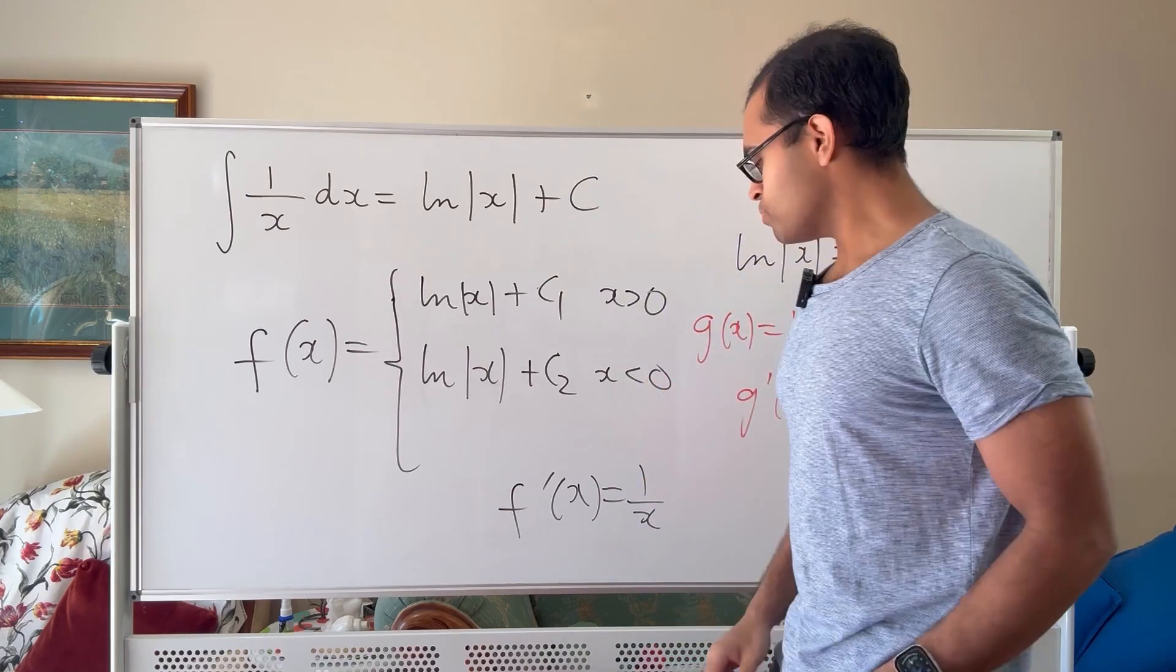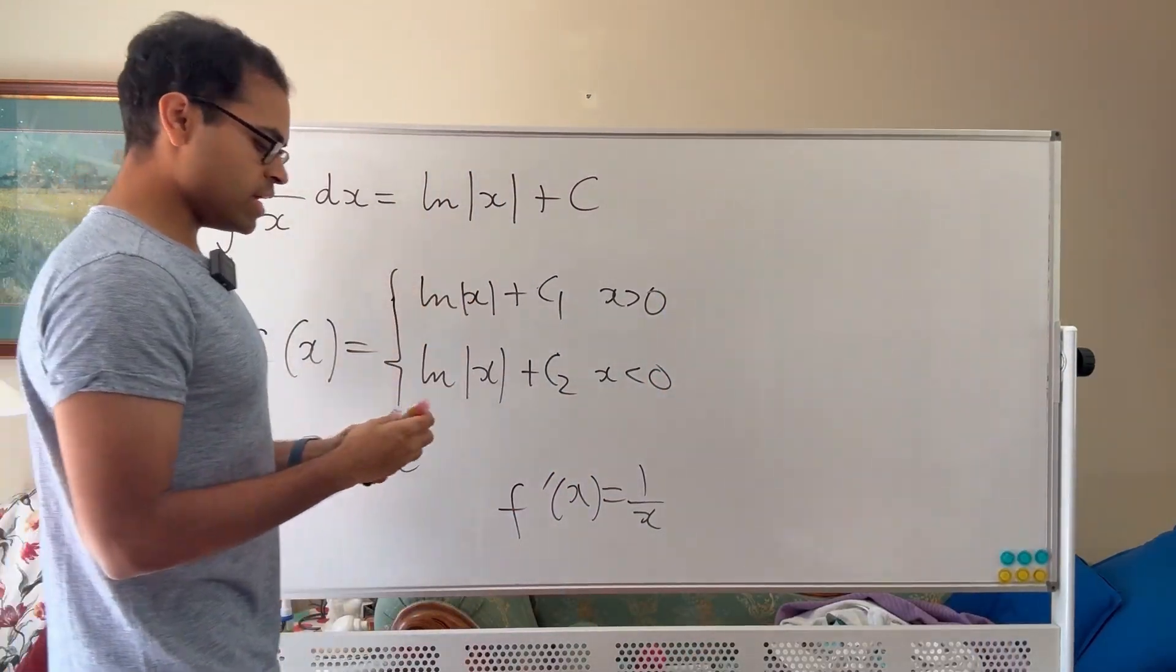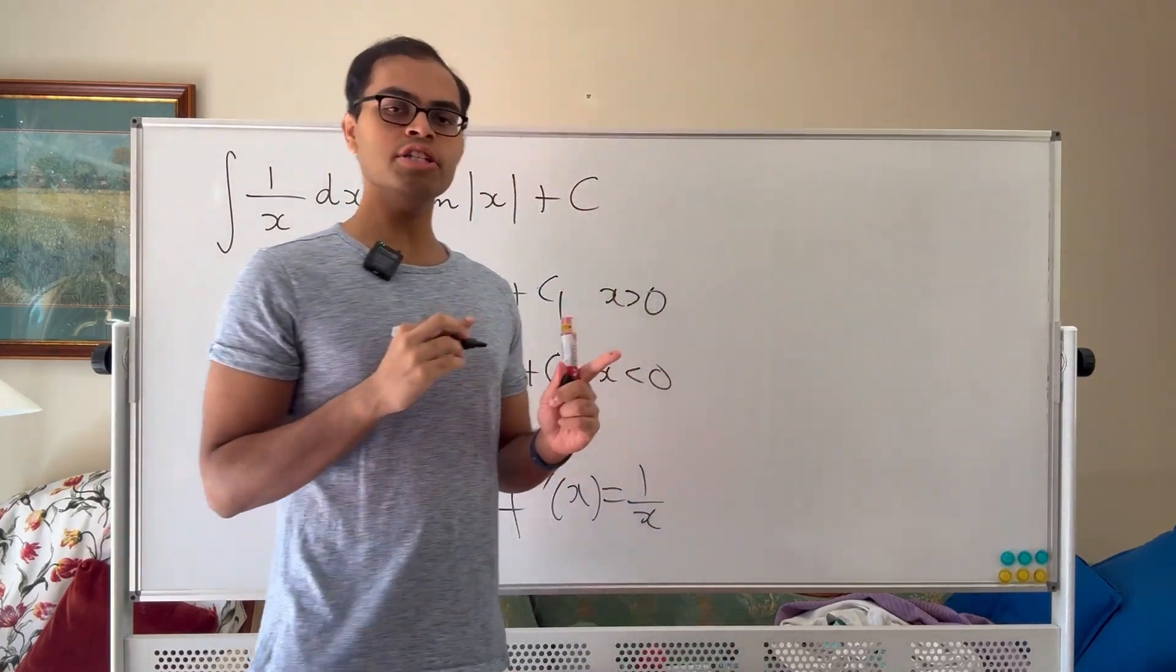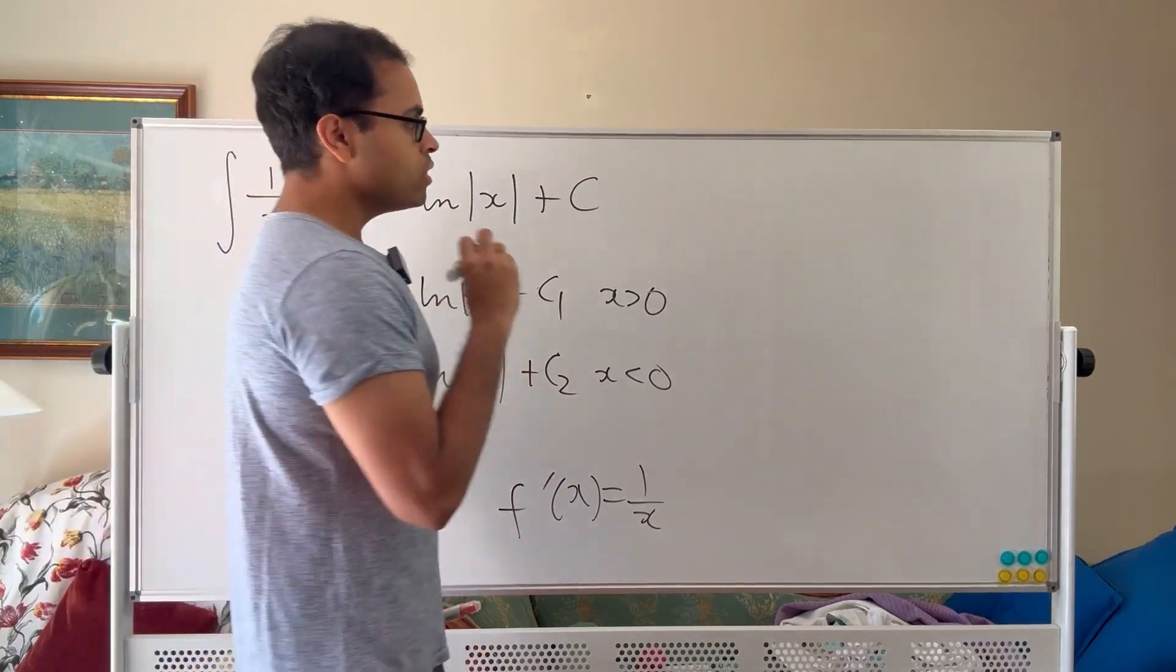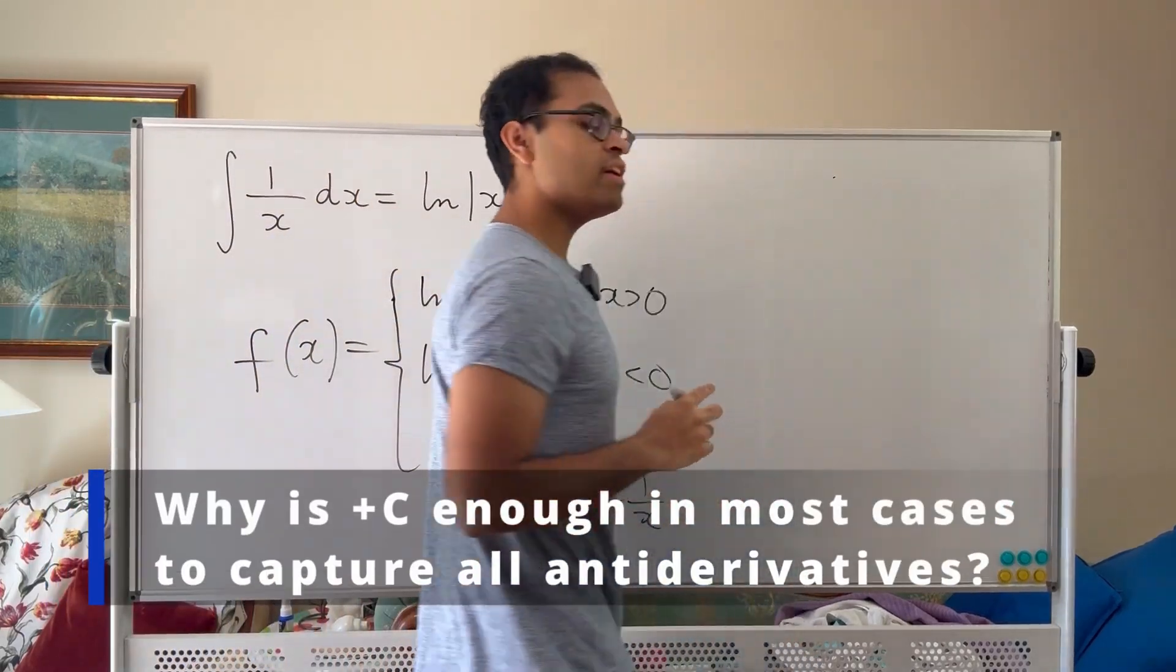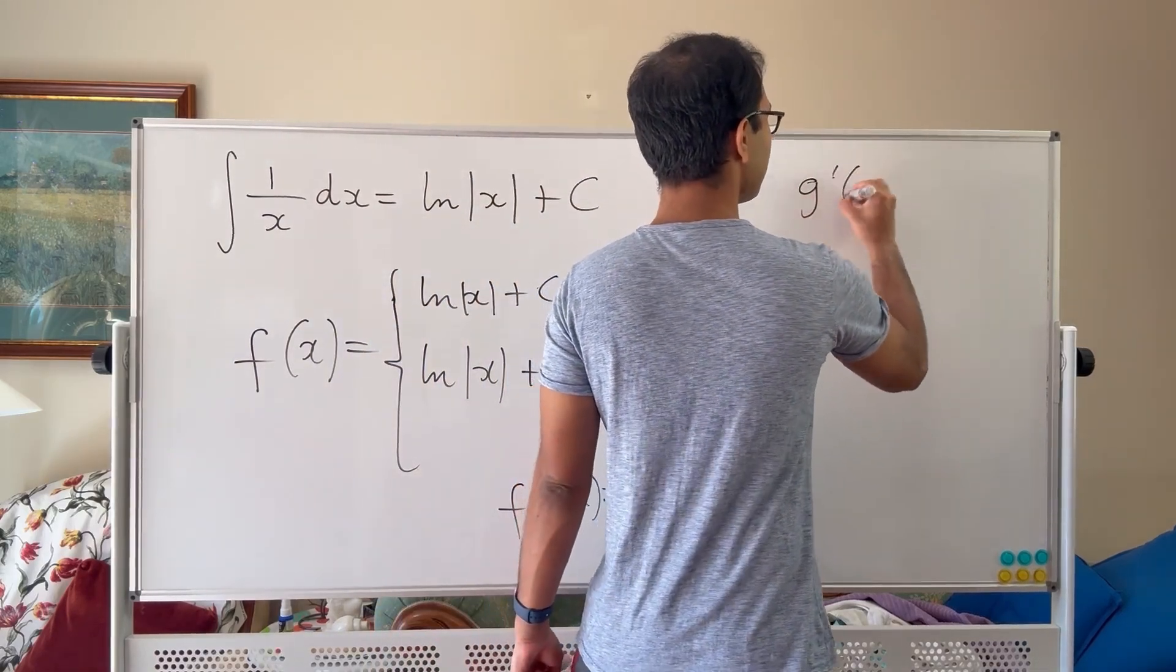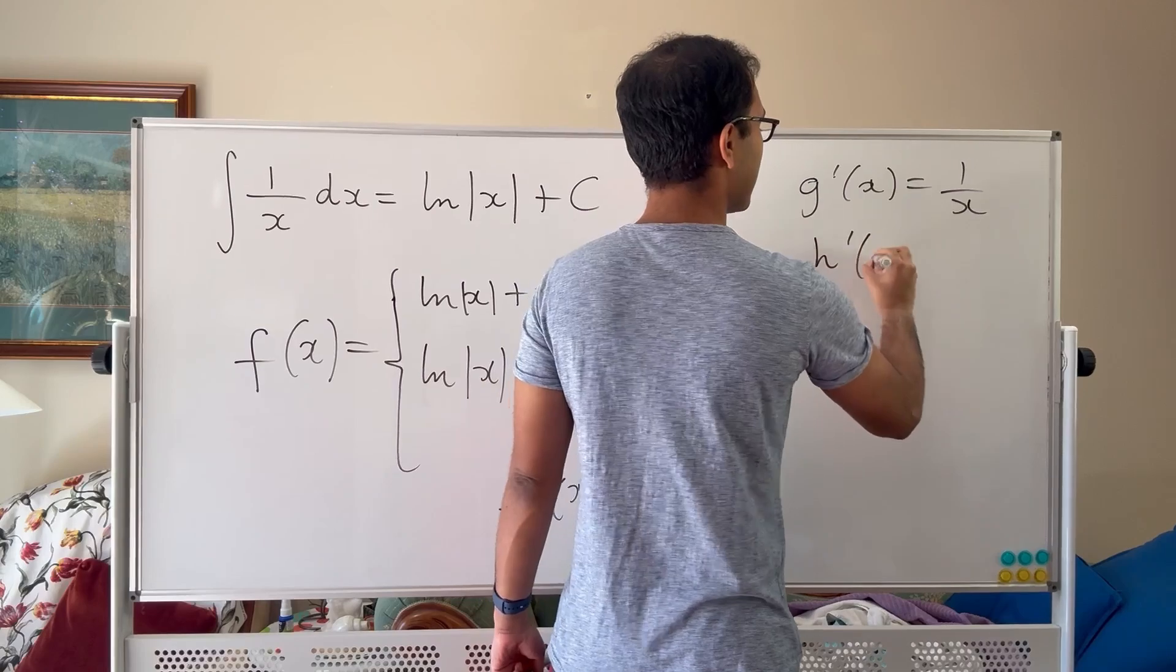It's going to be this kind of function which is piecewise defined. And how do you actually prove it? Where do things go wrong? Well what we can do is we can explain it as follows. If you have a function, if you find its anti-derivative, why do we add a constant? Well the reason is that if two functions are an anti-derivative for the same thing, suppose that g prime of x is equal to 1 over x and suppose that h prime of x is equal to 1 over x.